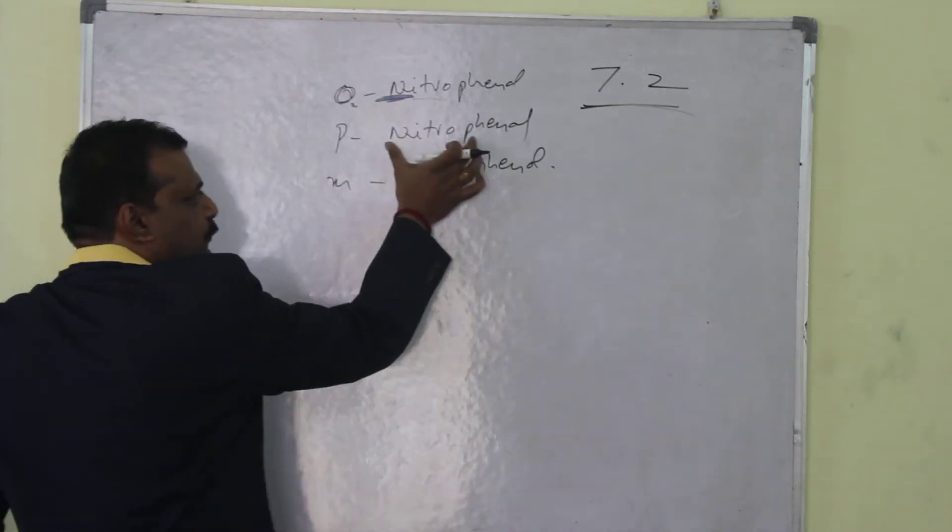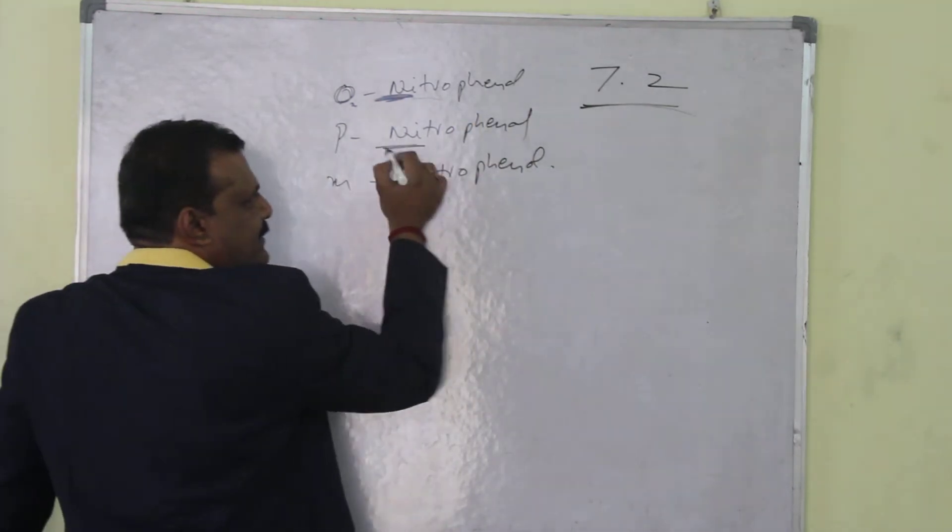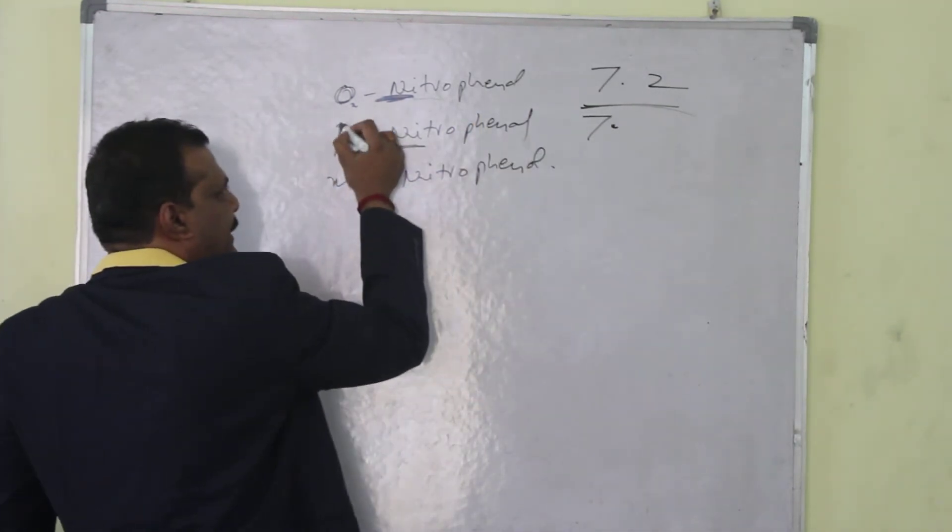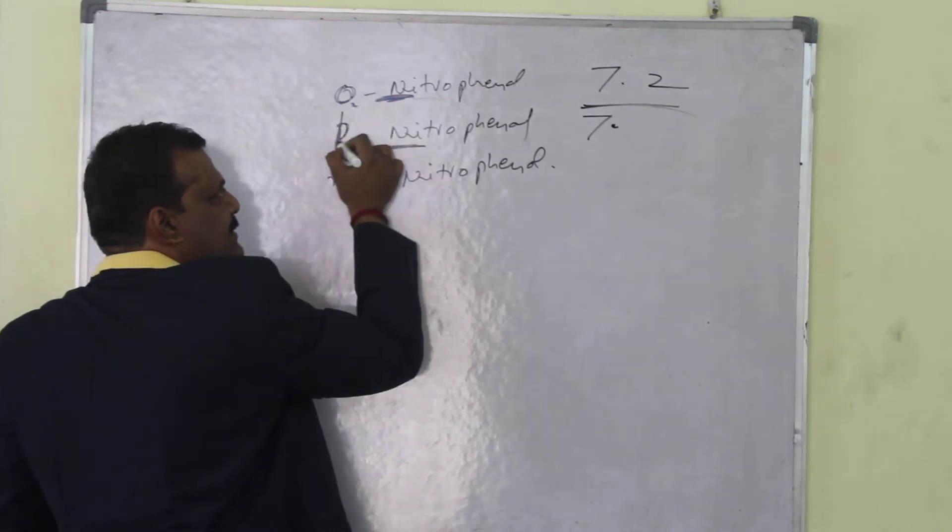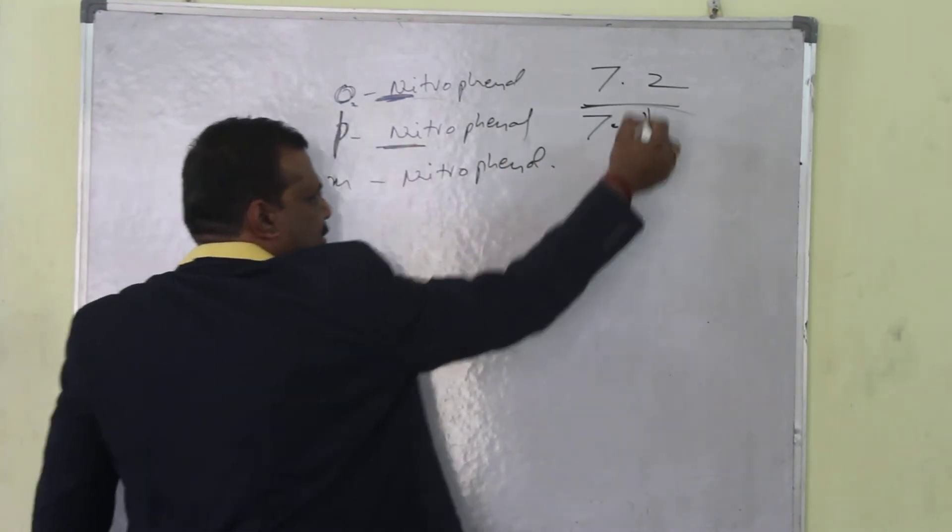And in case of para nitrophenol, nitrogen 7, and P. How do you write P? This is P, P looks like 1. 7.1.